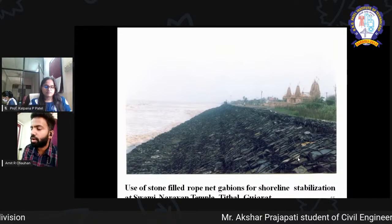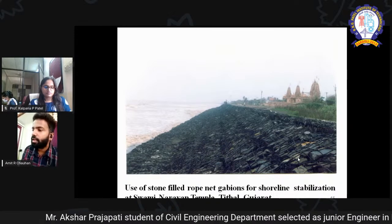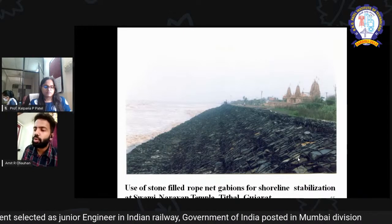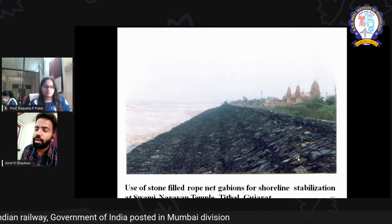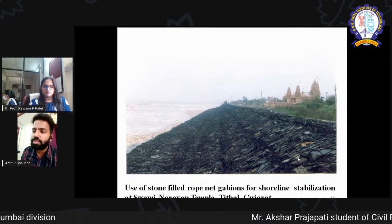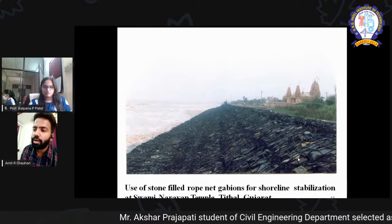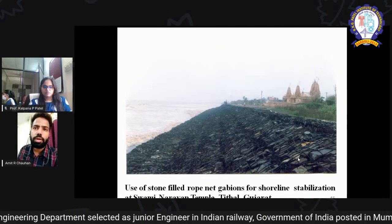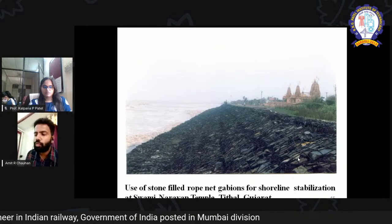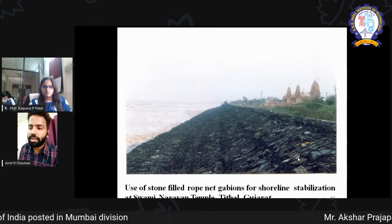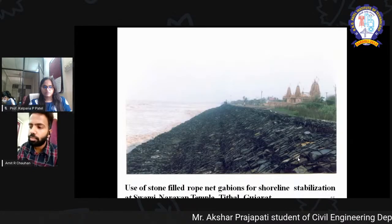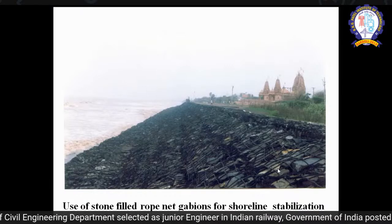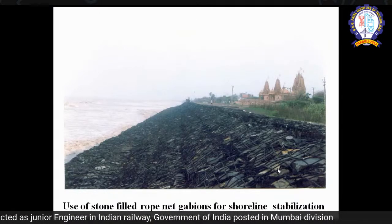This is a practical example from our own nearby Teethal site, where seashore erosion was significant because waves were reaching the temple site. You can see stone blocks arranged in a slope pattern, with a horizontal layer of stones also made. These stones are used because the waves of the sea are very strong and can easily displace the stones. This is one practical example near our site, and our minds should observe such real-world problems and learn how to solve them.